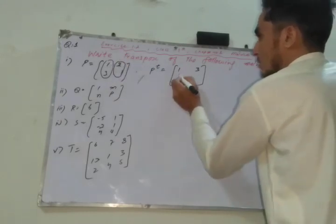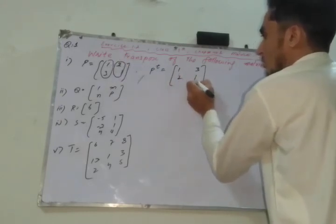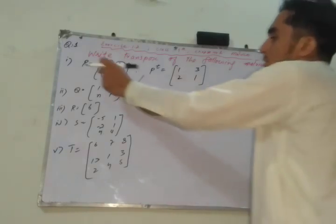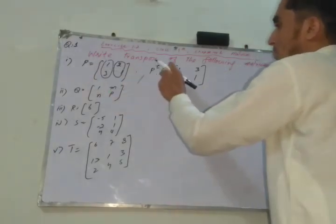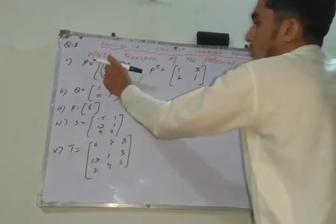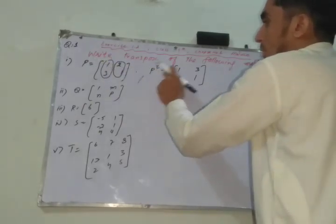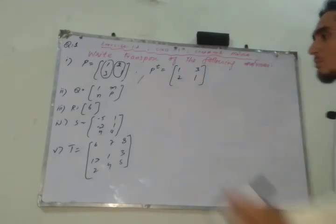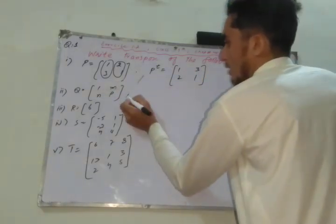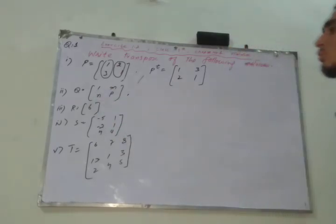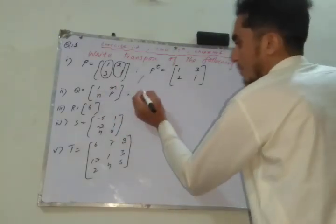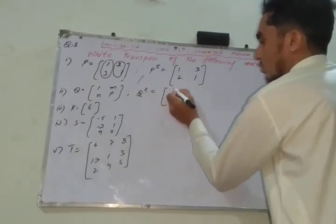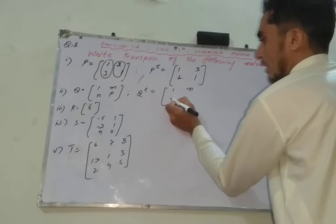Then two is row two. P transpose is equal to one two three one. P transpose is equal to one.